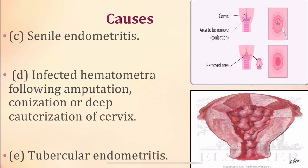Senile endometritis, also known as atrophic endometritis. Following the withdrawal of estrogen, the uterus, cervix, and vagina will lose their defense. As a result, infection takes a greater hold in the uterus. It is more likely to occur, and hence pyometra is more prominent in post-menopausal women.